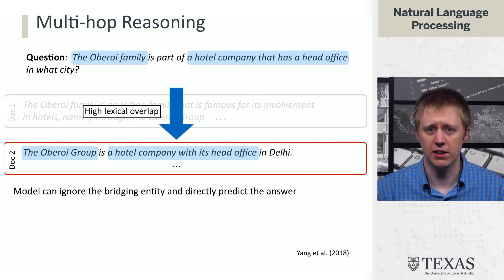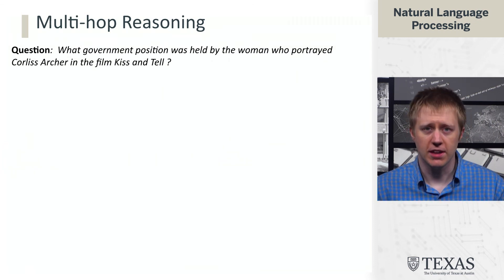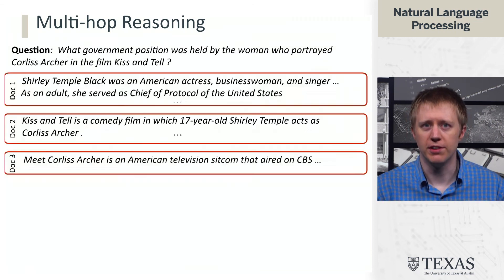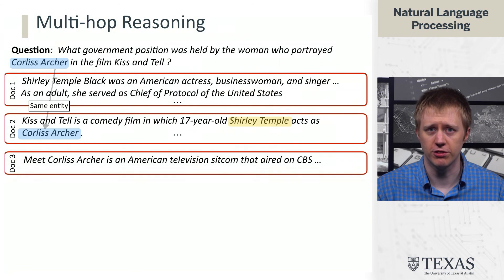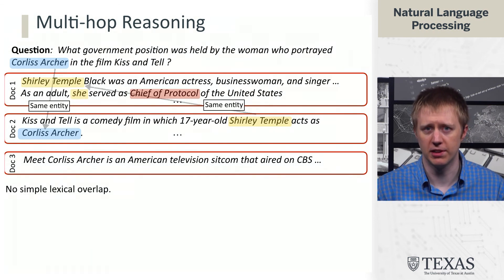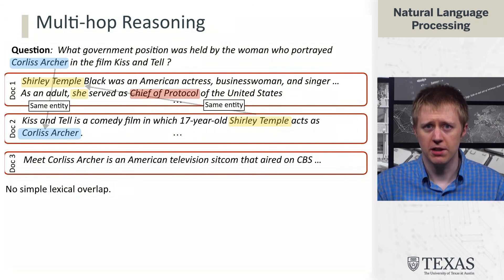Models are very good at just jumping directly to the answer, particularly when trained with BERT. The Corliss Archer example seemed more complicated — we needed to find out who played Corliss Archer and then figure out what government position Shirley Temple held. There isn't quite the same lexical overlap there, but there is still a cue that models can use.